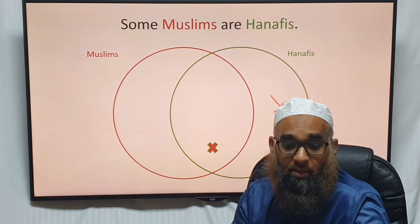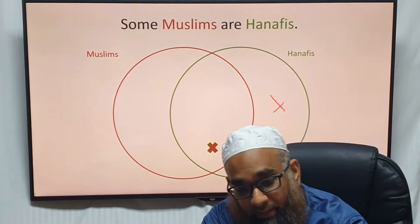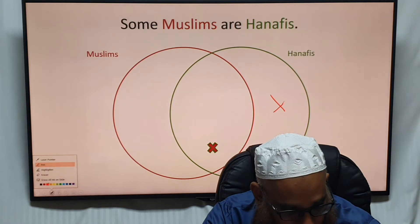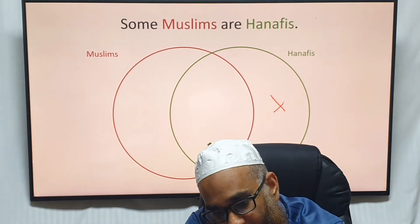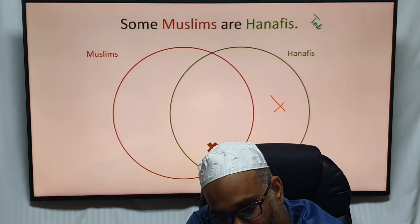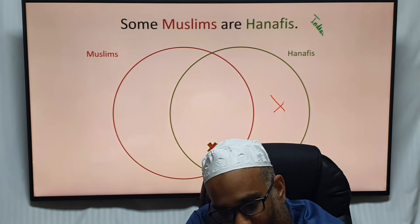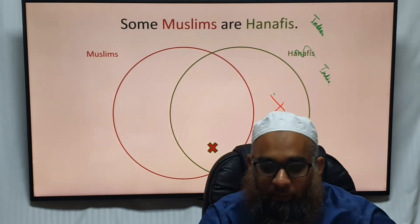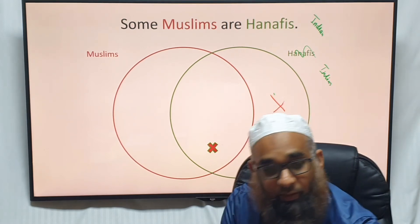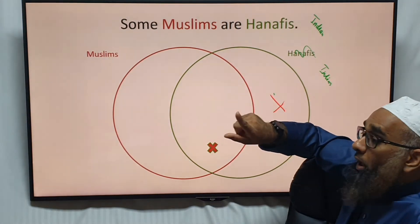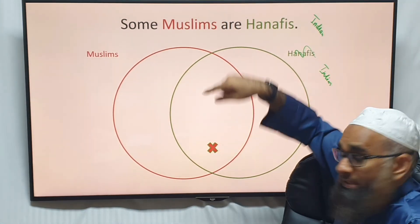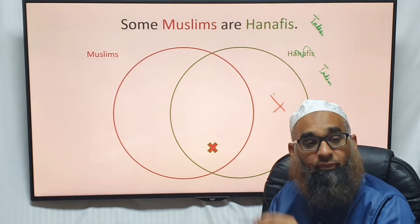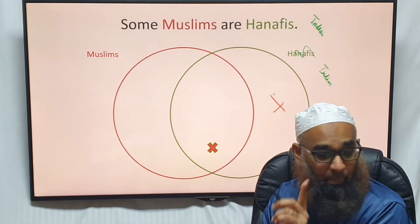For example, let's say 'Some Muslims are Indian.' If you take out Hanafis and put Indian in here, you'll see how the problem works. You can't apply that one rule across the board. In the Hanafi case you could have shaded it out and said all Hanafis are Muslim, but that will not work as a general rule for I propositions.